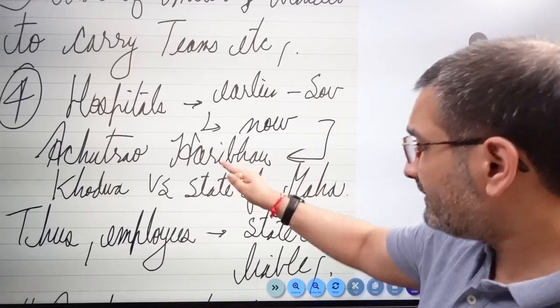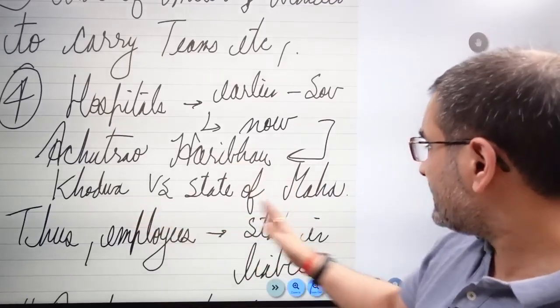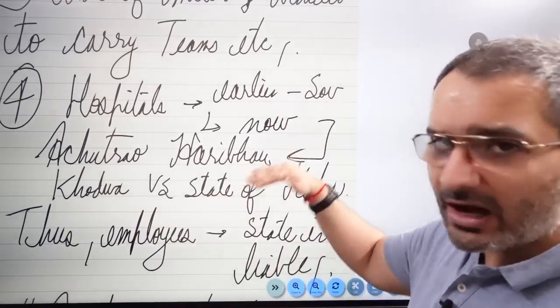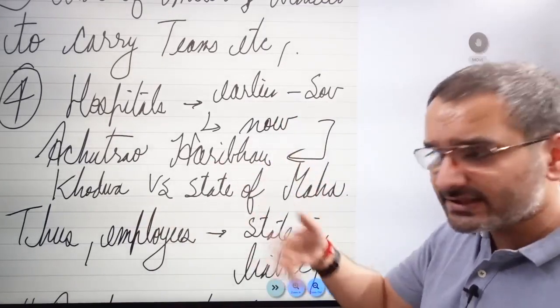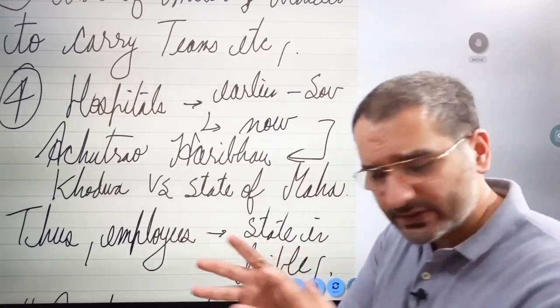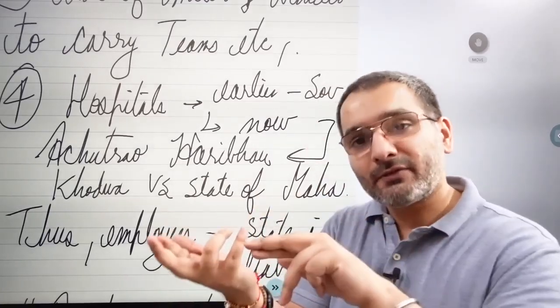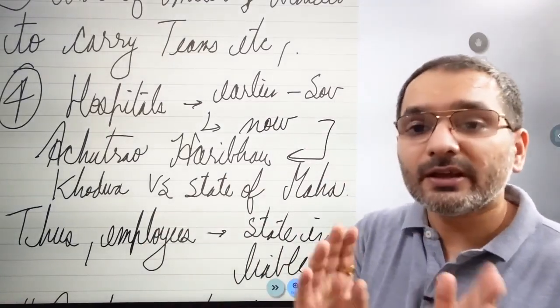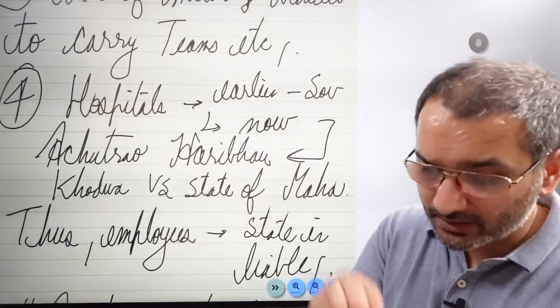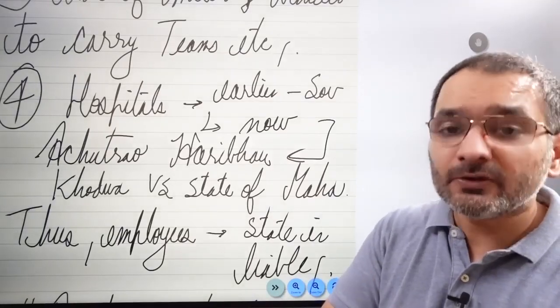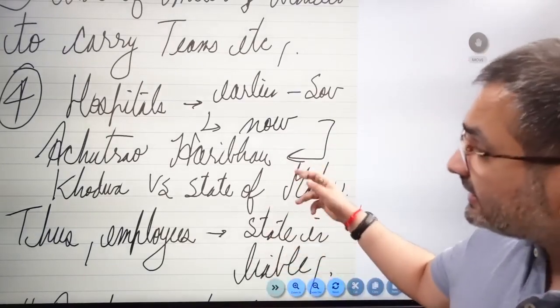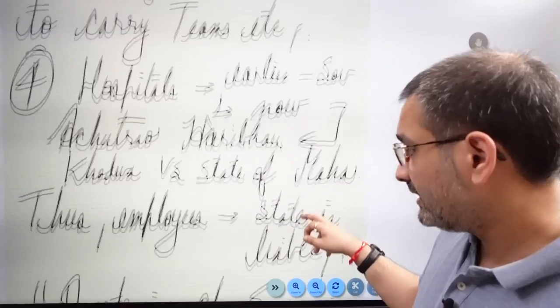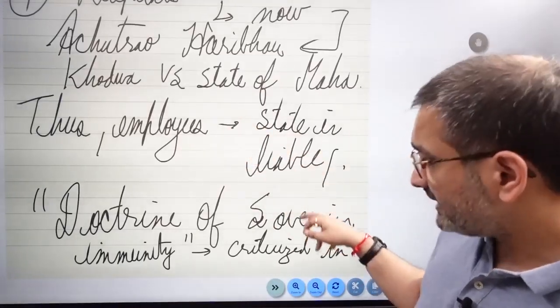Hospitals - the earlier judgment was that they are part of sovereign function. Now, thanks to Achutrao Haribhao Khodwa vs State of Maharashtra, you can remember it. Anytime you've forgotten the name of a judgment, no need to worry, just cap out your language very smartly. Just say as per the recent judgment of the Supreme Court, the current position of law is that the state will be held liable for its employees in government hospitals.